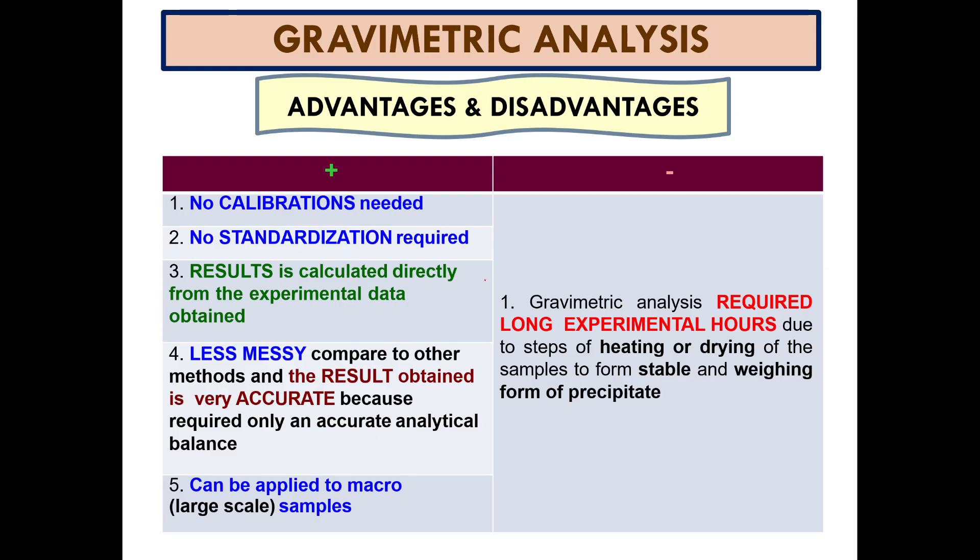The advantages of gravimetry analysis compared to other analyses are: no calibration is needed — in volumetric analysis you need to calibrate instruments like pipettes; no standardization is required — in volumetric analysis you sometimes need to standardize the solution; the result is calculated directly from the experimental data obtained; and compared to other methods, the result obtained is very accurate because it only requires an accurate analytical balance.